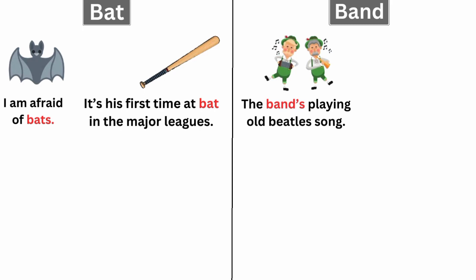Now we have band. Band is a musical group. The band is playing an old Beatles song. The other meaning of band is a hair accessory. She always ties her hair back in a band.